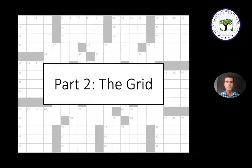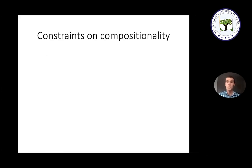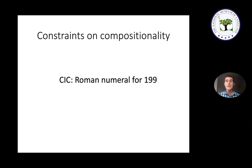Now I'm going to talk about the grid — the other major part of a crossword puzzle. In discussing the clues, the main thing I focused on was the power of compositionality. But another important aspect is that there are also usually some constraints on it. Compositionality involves having a finite number of parts that you can put together in infinite ways, but this process does have some constraints — you cannot just put things together willy-nilly.